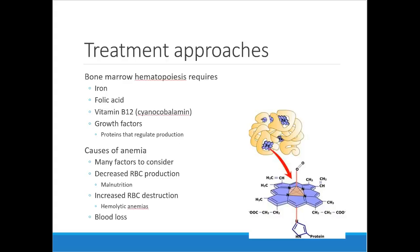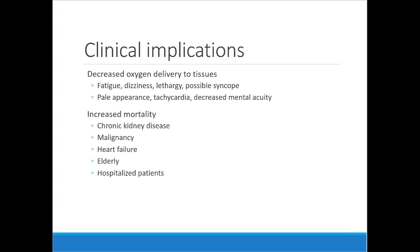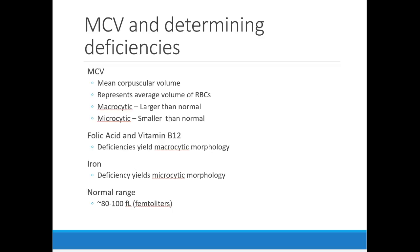The approach to treatment considers hematopoiesis within the body, which requires cofactors: iron, folic acid, vitamin B12 (cyanocobalamin), and growth factors that regulate production. Causes of anemia include frank blood loss such as heavy menstruation, decreased red blood cell production from malnutrition, and increased red blood cell destruction from hemolytic anemia. Clinically, patients feel fatigued, dizzy, and tired, may appear pale, and can have tachycardia and decreased mental acuity — more severe symptoms with certain comorbidities.